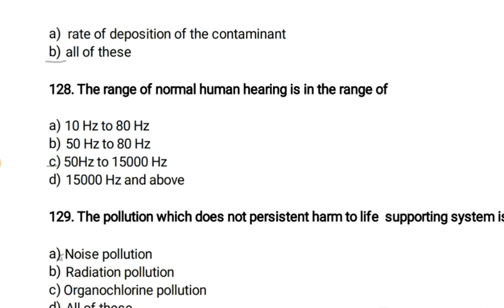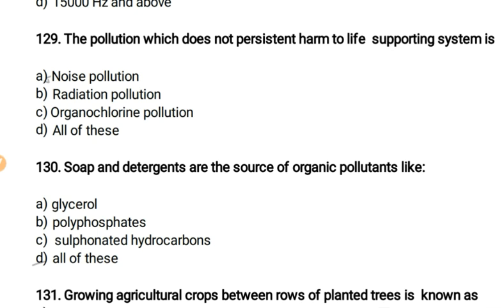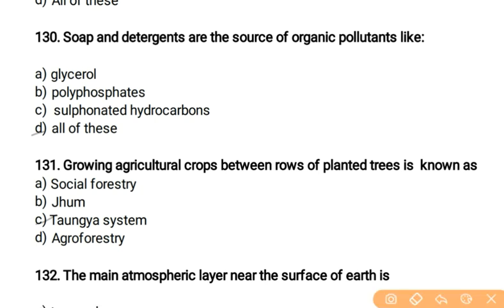The effects of radioactive pollutants depend upon the rate of diffusion, energy releasing capacity, and rate of deposition of the contaminant — all of these are correct. The range of normal human hearing is 50 Hz to 15,000 Hz. The pollution which does not cause persistent harm to life-supporting systems is noise pollution. Soap and detergents are sources of organic pollutants like glycerol, polyphosphates, and sulfonated hydrocarbons.